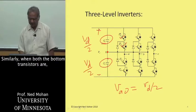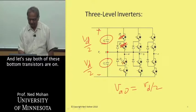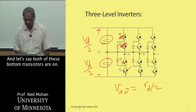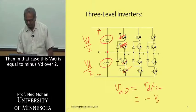Similarly, when both the bottom transistors are turned off and both of these bottom transistors are on, then in that case this VAO is equal to minus VD over 2.